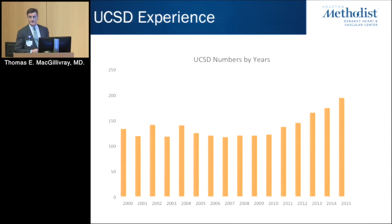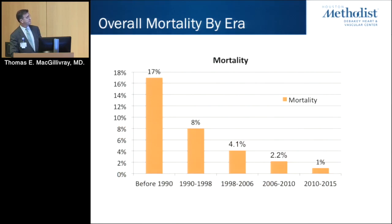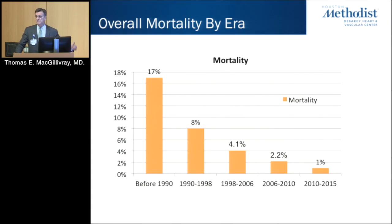This is a bar graph of the experience at UCSD since 2000. They have been performing over 100 and approaching 200 of these operations a year. As you would expect with increasing experience, the mortality rate has lessened over time. I think that is due to a combination of getting better at the nuances of the operation and, perhaps more importantly, getting better at selecting the patients for the operation.